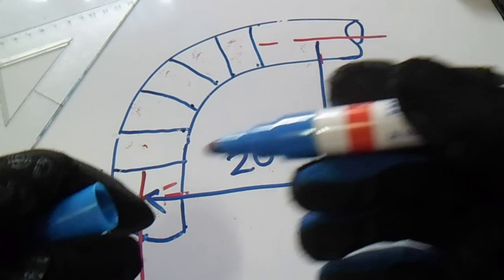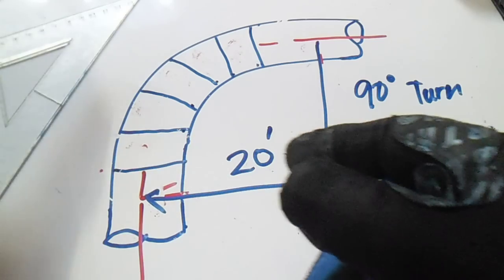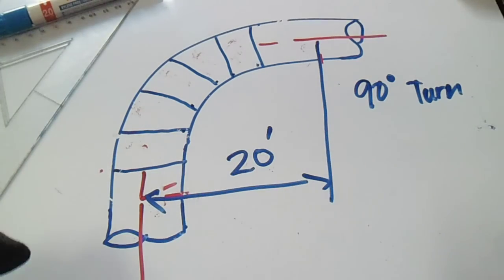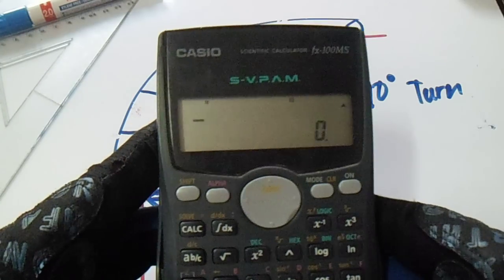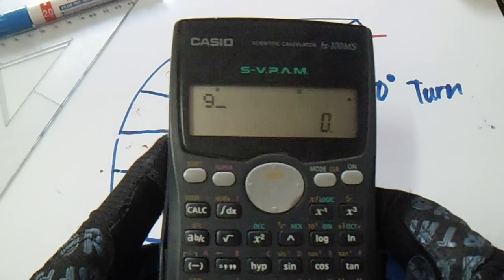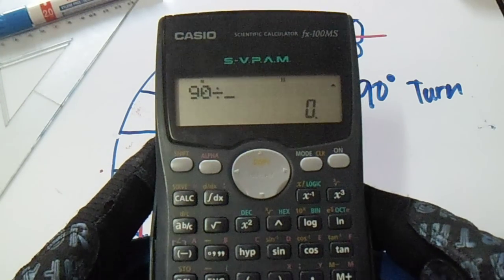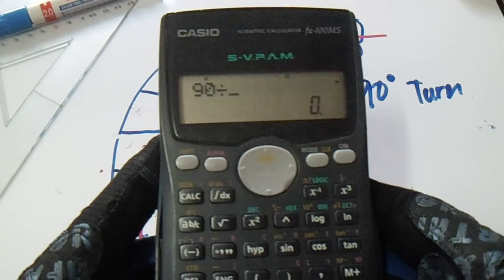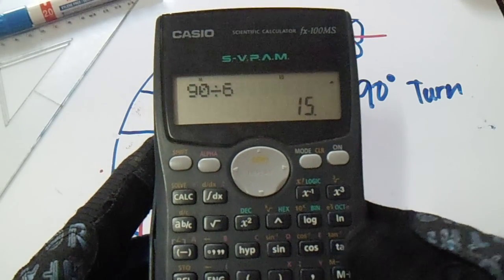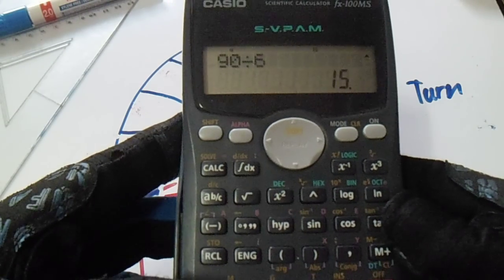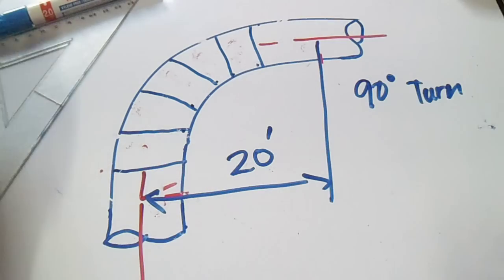For the 90 degree turn, just divide it by the number of welds. The number of welds is six, so 90 divided by 6 equals 15 degrees turn.